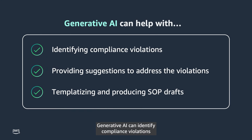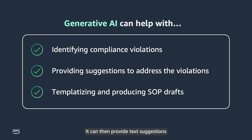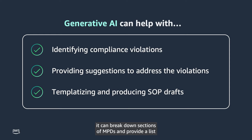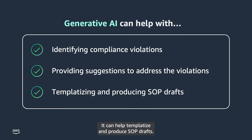Generative AI can identify compliance violations, such as misses and inaccuracies, by comparing each MPD to its thousands of SOPs. It can then provide text suggestions to address compliance violations in the MPD. For new drugs where SOPs and MPDs are just being defined, or where the manufacturing process has recently changed, it can break down sections of MPDs and provide a list of SOPs which need to exist for each section. It can help templatize and produce SOP drafts.